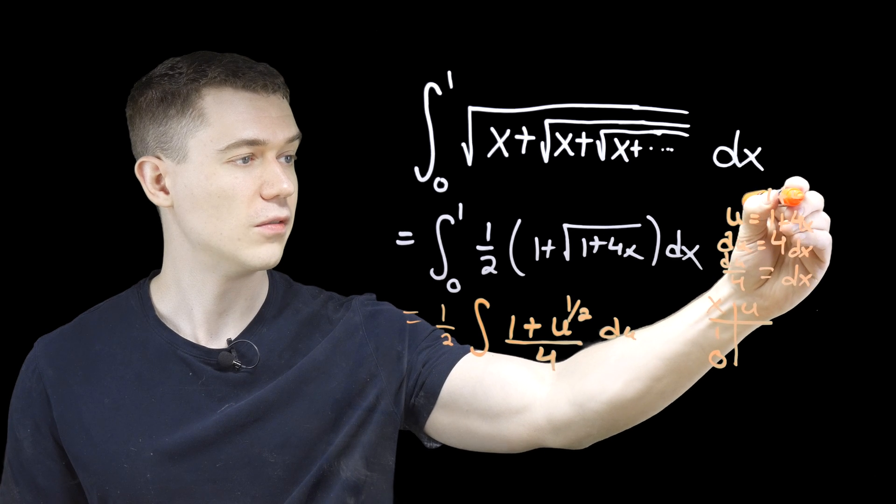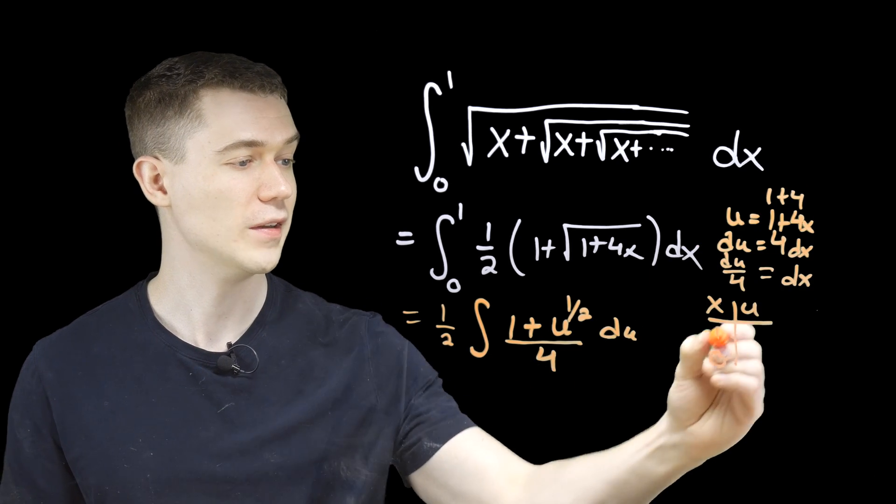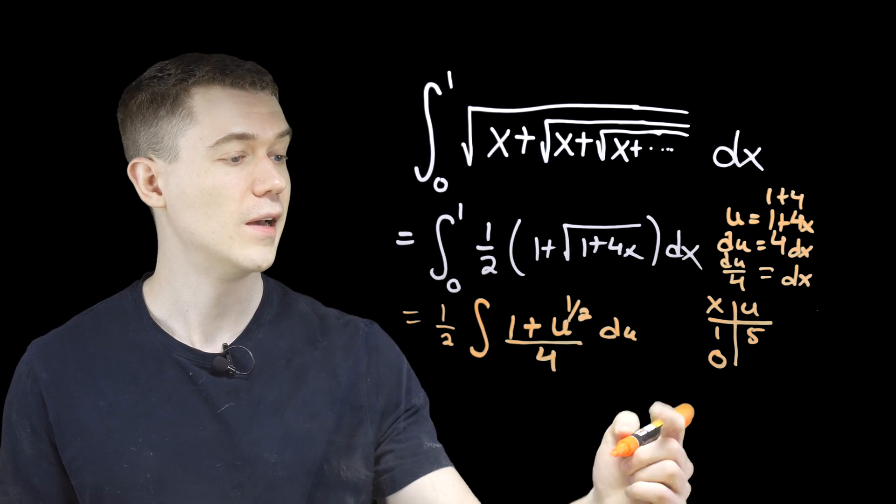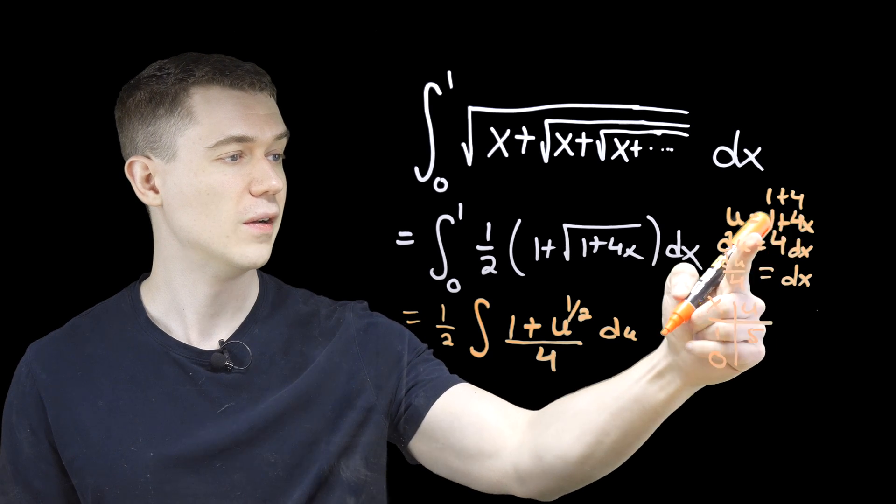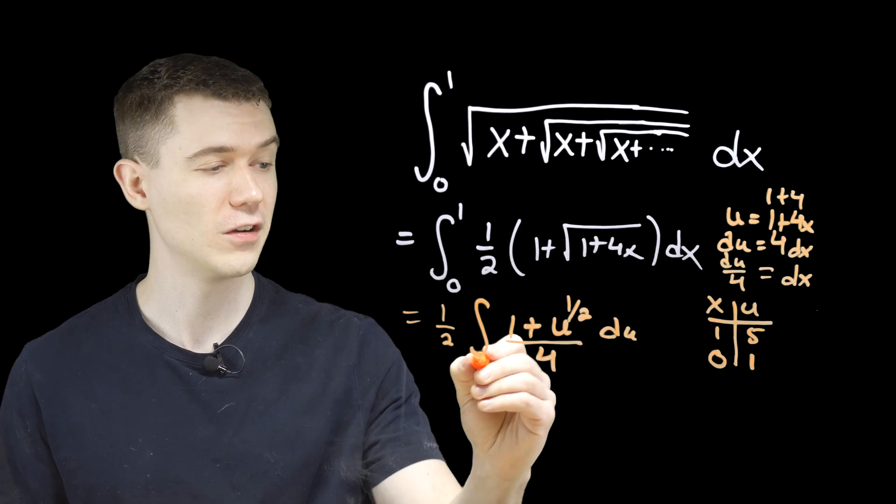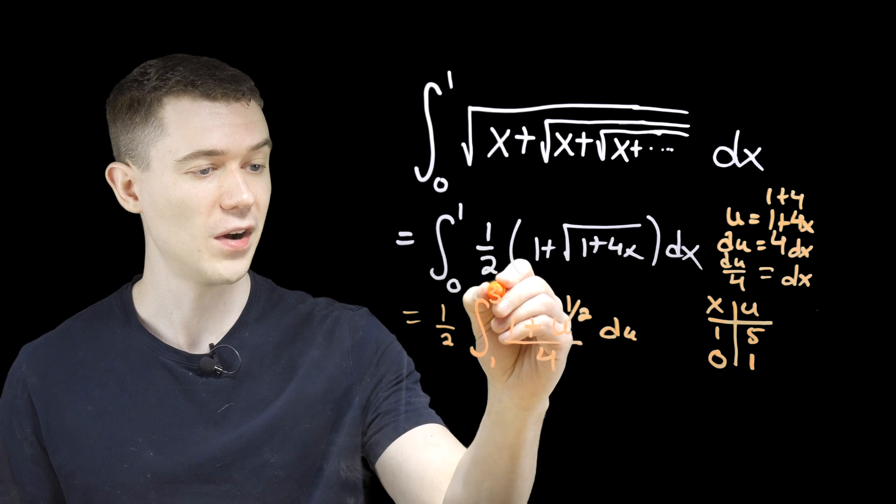one plus four. And we let x be one. So u should be five. When we plug in zero here, one plus zero is one. So our new limits of integration, I think, are one to five.